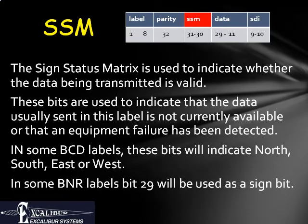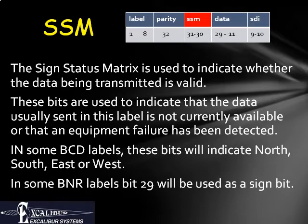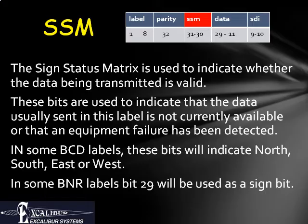The sign status matrix are two bits in BCD labels and three bits in BNR labels, used to indicate sign or direction and also to indicate problems on the transmitter side. Since receivers typically expect data to be sent at set intervals, if the transmitter is encountering hardware problems, undergoing self-test, or just doesn't have data to send, it must send the labels anyway, but can use these bits to indicate that the data should not be trusted.